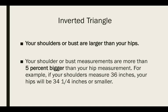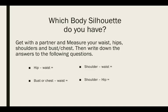So, what you're going to do is take a measuring tape. And you're going to measure your hips, your waist, and your chest, and you're going to figure out what your shape is. This is really important for your upcoming assignment. So, if you're an inverted triangle, I'm going to give you a second, come back, pause the video. Your shoulders and your bust are larger than your hips. Your shoulder or bust measurements are more than 5% bigger than your hip measurement. So, an example I have here is if your shoulders measure 36 inches, your hips will be 34 and a fourth inch or smaller.